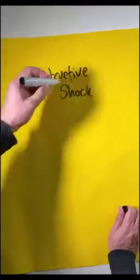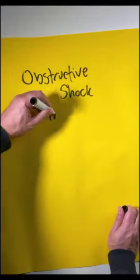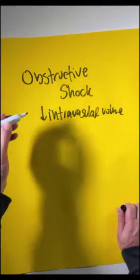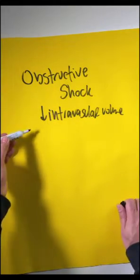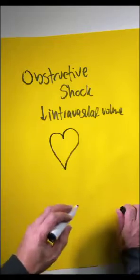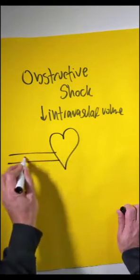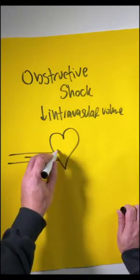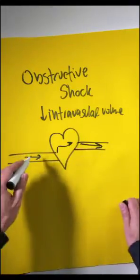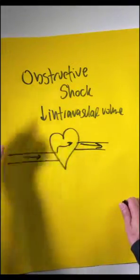With obstructive shock, it's a relative decrease in the intravascular volume. The body doesn't lose intravascular volume but there's a problem of getting the intravascular volume into the heart or through the heart. If you imagine the heart as a continuous pump, we have trouble getting blood into the heart, through the heart, and out of the heart. As long as you understand this model, you understand obstructive shock.